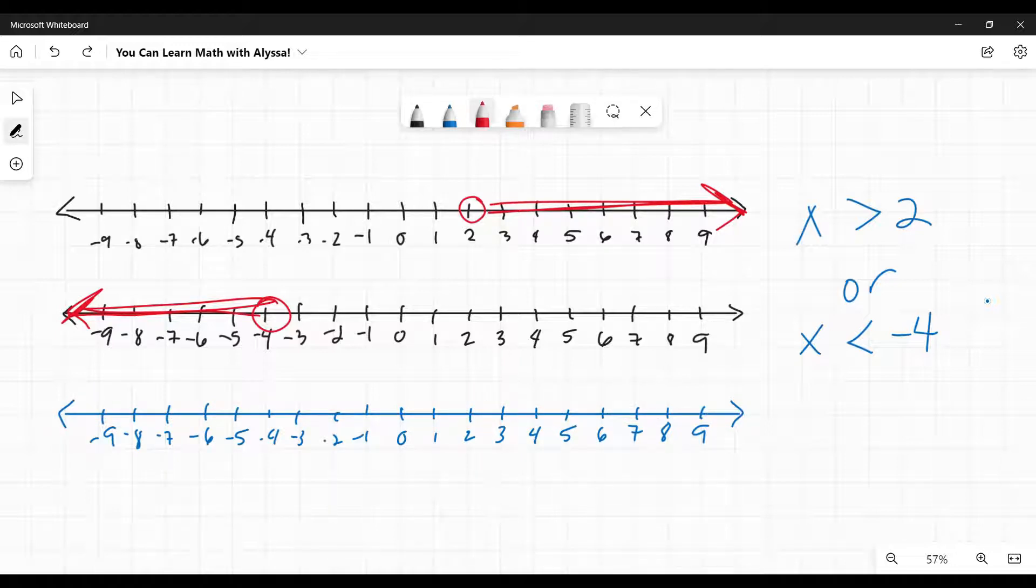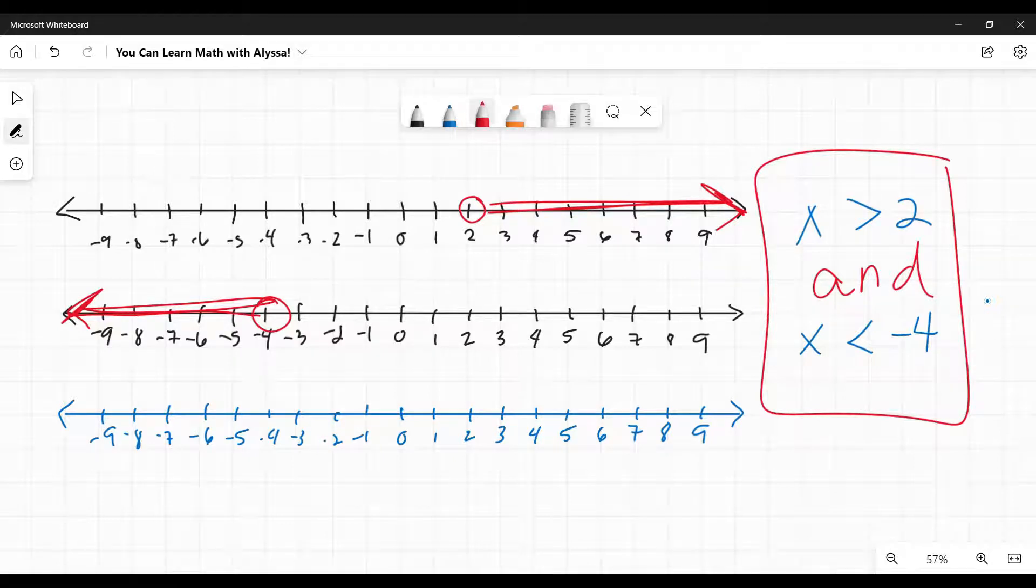Now, what if it had said and? If it said x is greater than 2 and x is less than negative 4, there isn't any number. As you can see, there is no overlap between these two number lines. So my final answer is nothing. I don't highlight anything. And think about this, not in terms of number lines, but just what you know about numbers. Is there any number that's bigger than 2 but less than negative 4? No, of course not, because negative 4 is far less than 2.